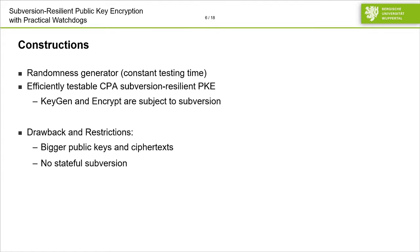With this as a building block, we then show how to build efficiently testable CPA subversion-resilient public key encryption, where the keygen algorithm and the encrypt algorithm are subject to subversion. However, there are some drawbacks and restrictions to our construction. While we can efficiently test it, our efficiency in terms of public key and ciphertext size goes down — we will have bigger public keys and ciphertexts. Additionally, our construction cannot handle stateful subversion, so the implementation of the encrypt algorithm is not allowed to hold any state between executions. This seems inherent to limited-time Watchdogs. Reverse firewalls might be a more fitting tool for these kinds of subversion attacks.